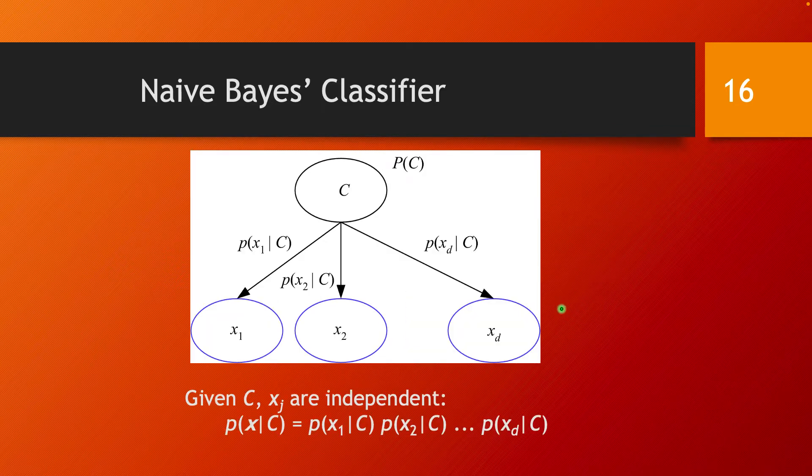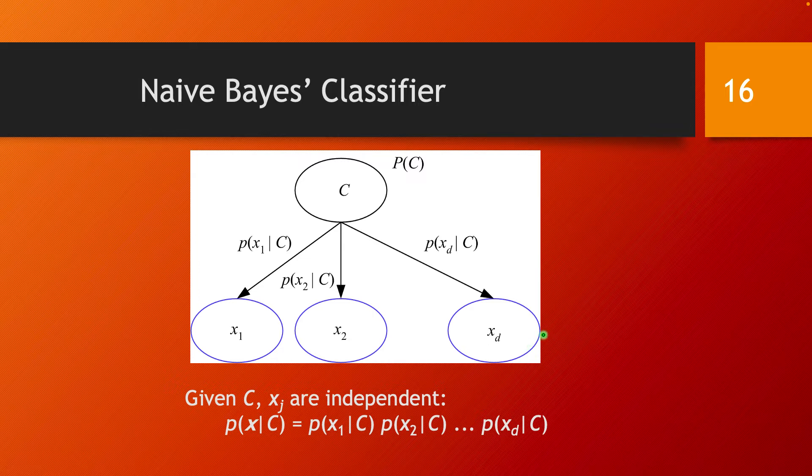For a naive Bayes' classifier, the idea was that the data points are independent of each other. And this can be represented with a graphical model in this way, where we have all of these data points X1, X2, all the way to Xd. And given the class C, the idea that Xi and Xj are independent of each other translates into having this probability of the whole vector of data points X given class C being equal to the probability of the individual points multiplied with each other.